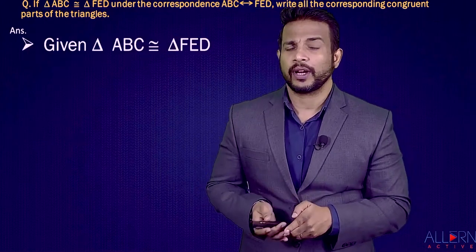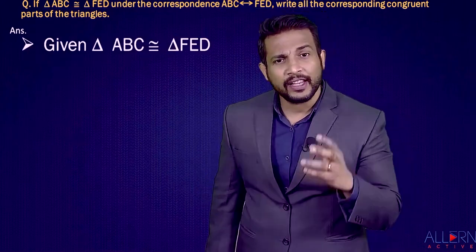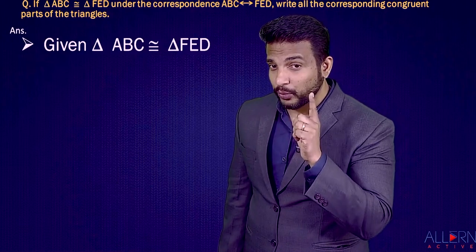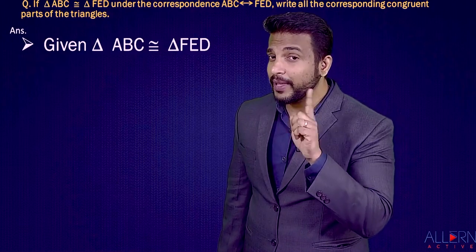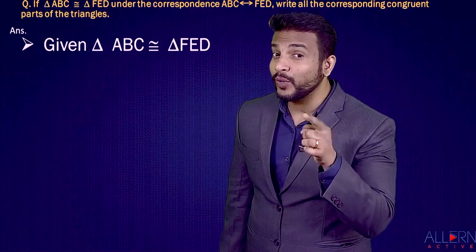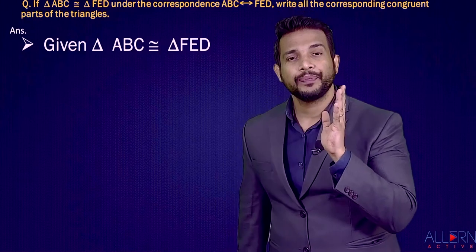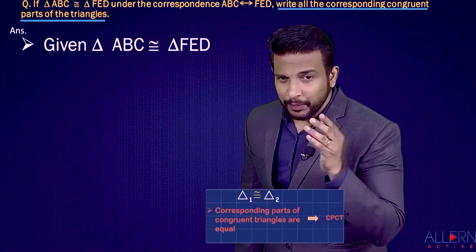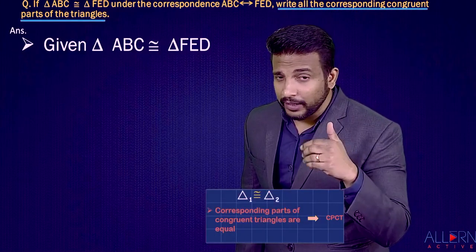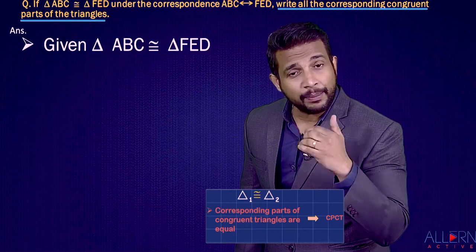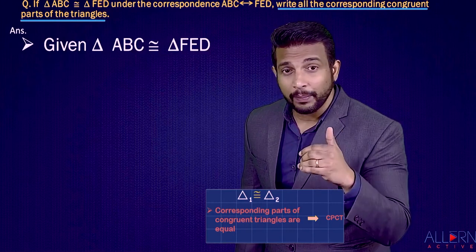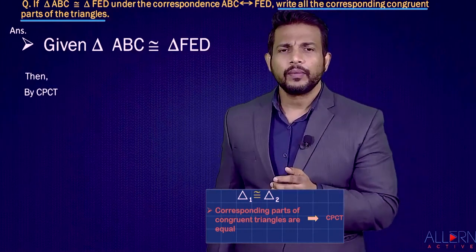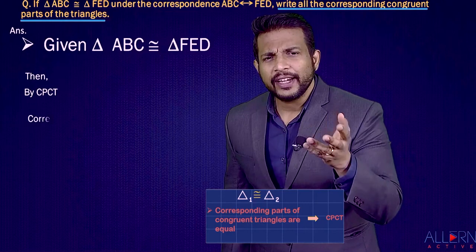What is given to us: triangle ABC is congruent to triangle FED. Remember, A corresponds to F, B corresponds to E, and C corresponds to D. From this, can we write CPCT? Yes — because we've already learned that if triangles are congruent, their corresponding parts are equal. So let's write it. Let's first write the corresponding sides.